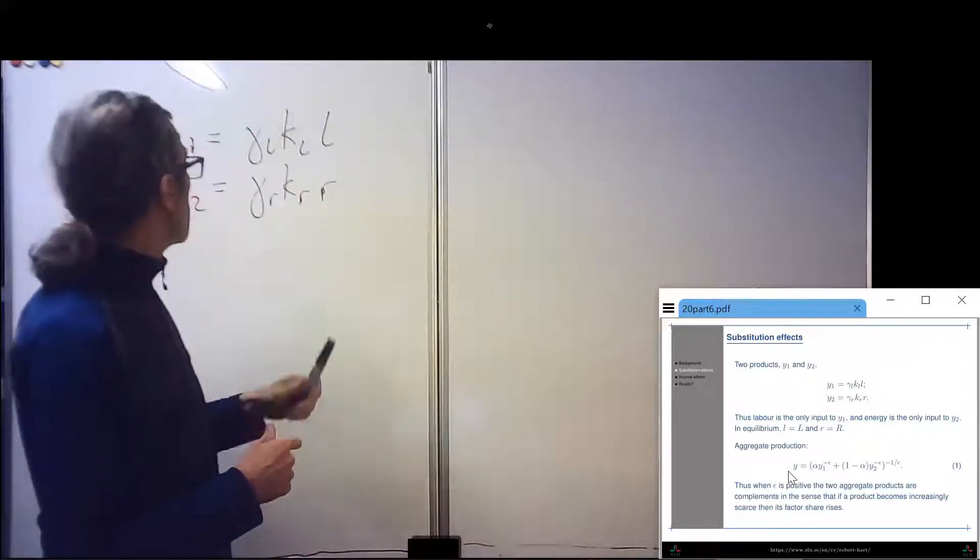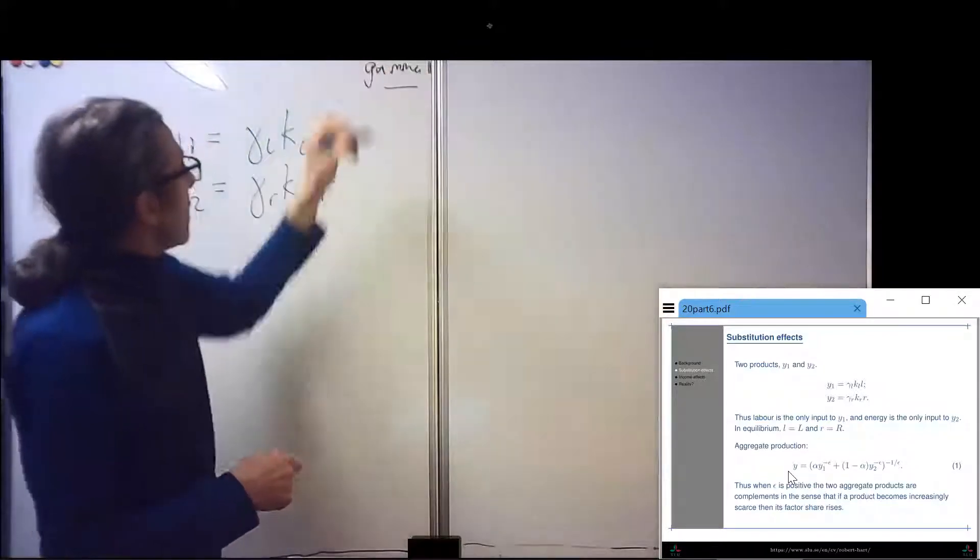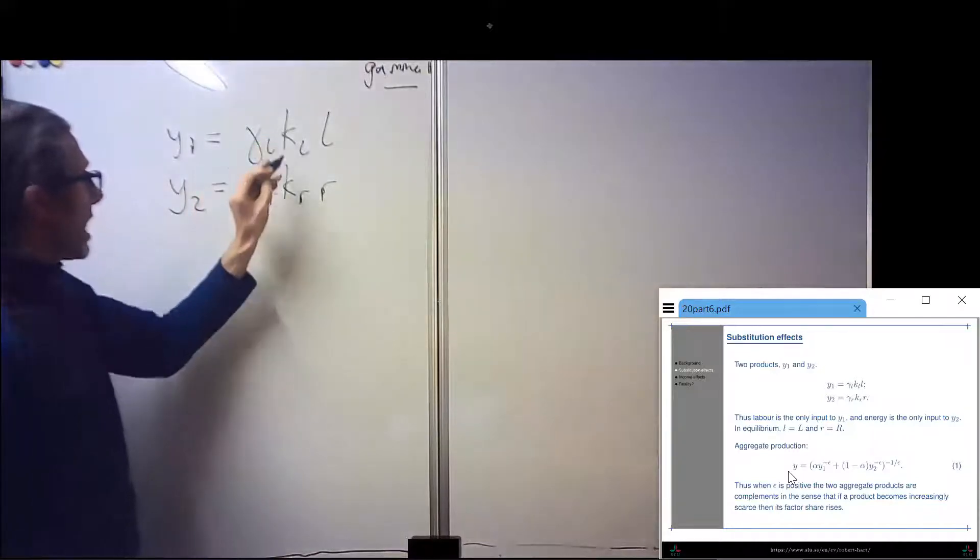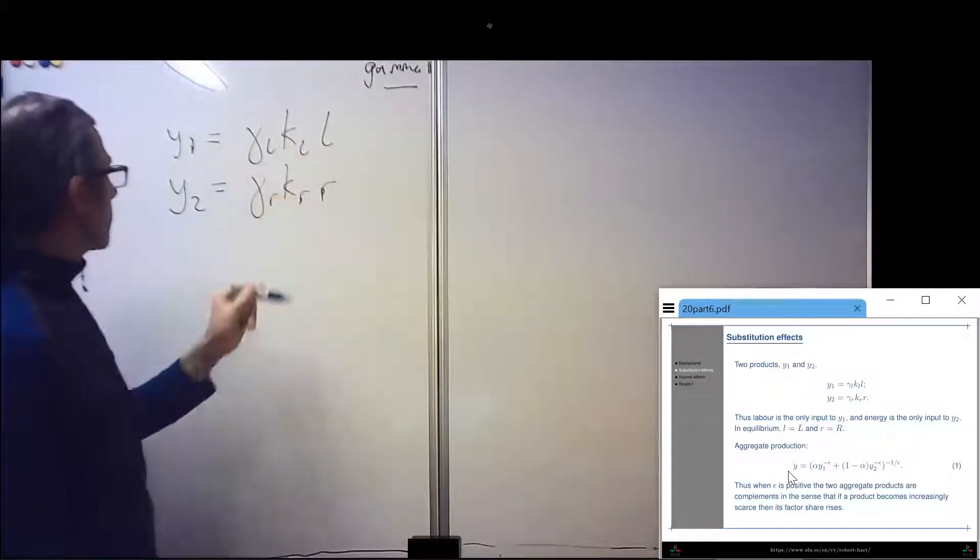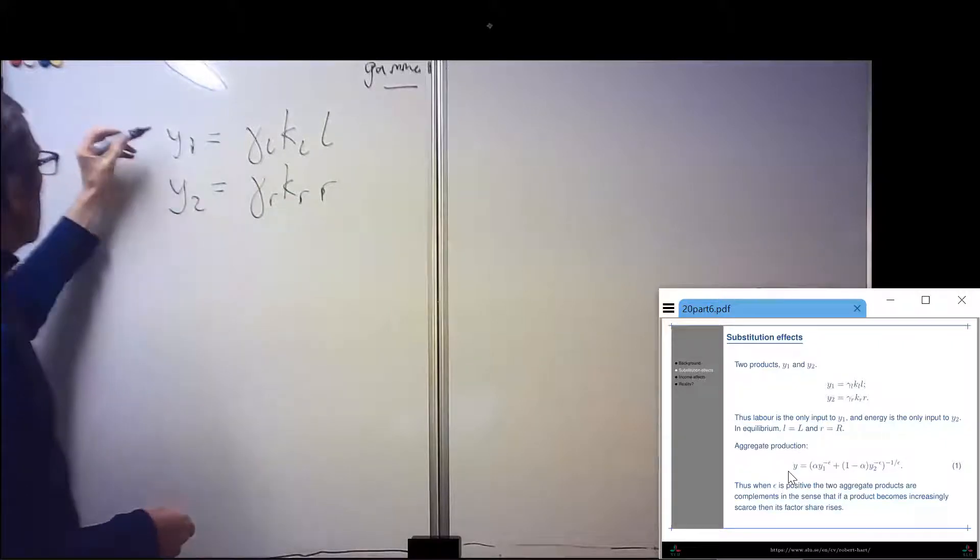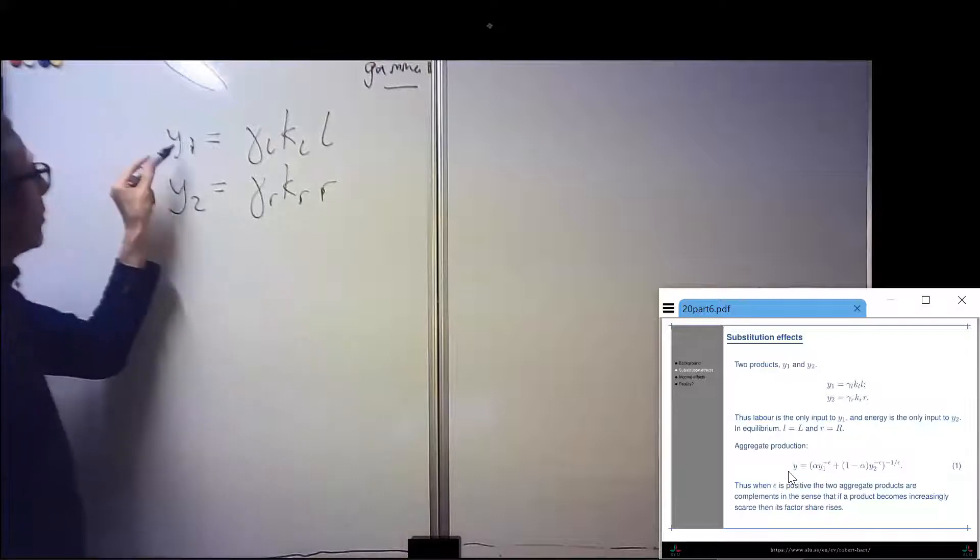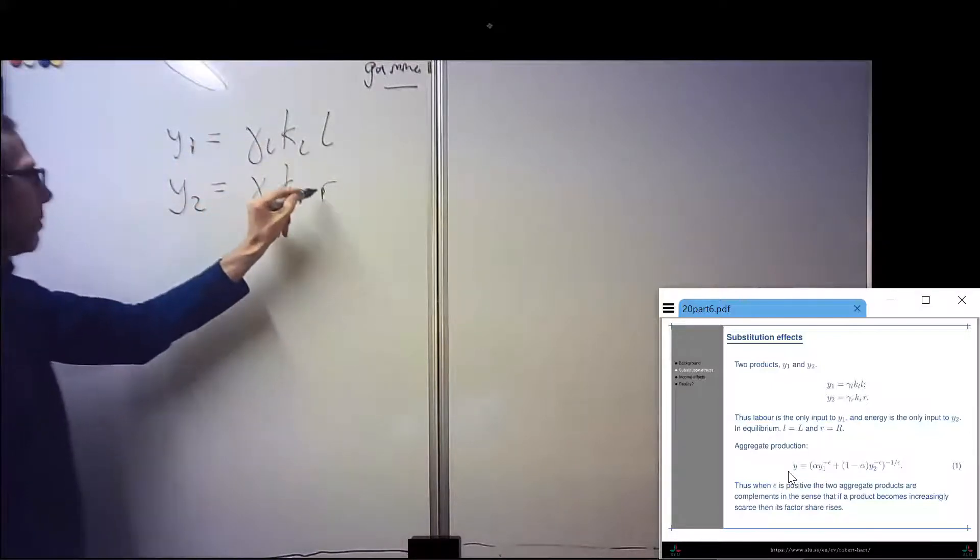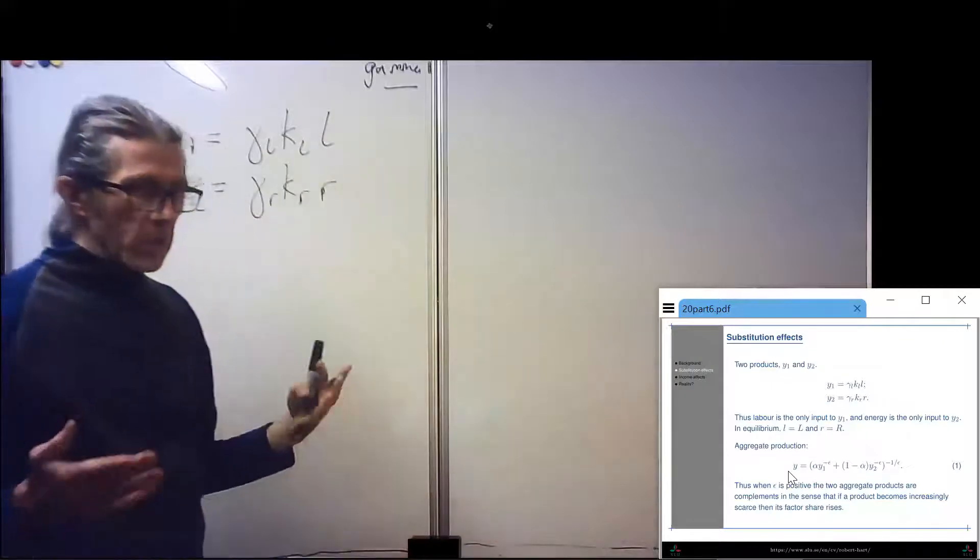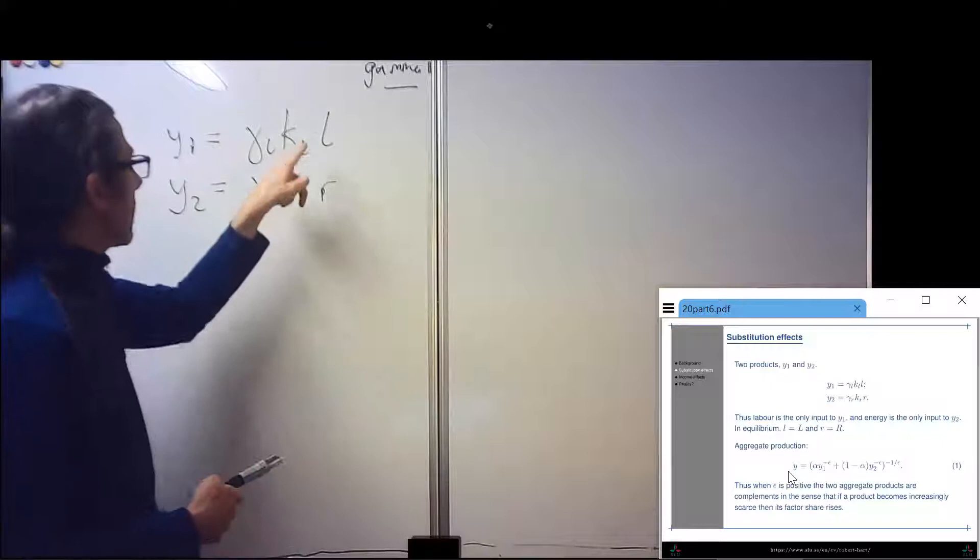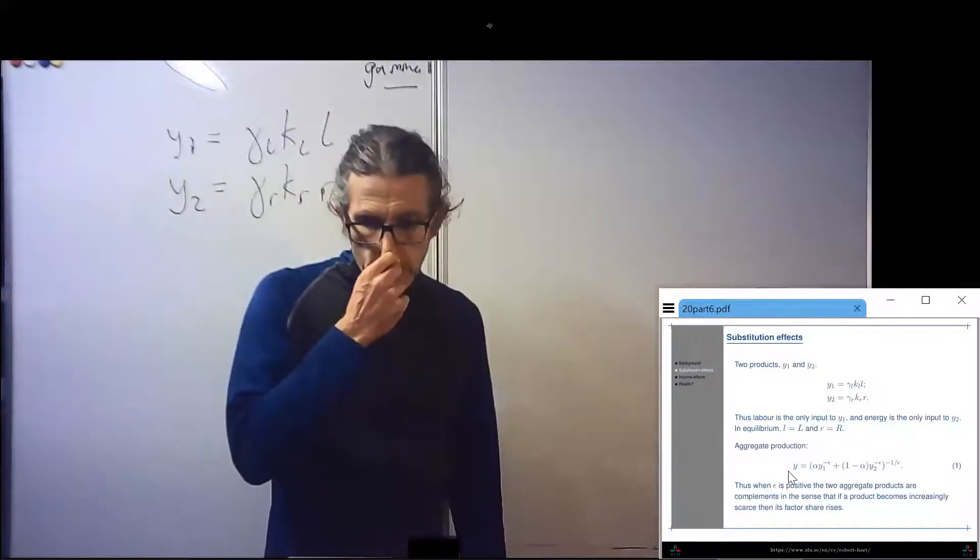So what are these inputs? The gammas are parameters. The K's are productivity levels or knowledge stocks. And the L's are the physical inputs of labor and resources. We're assuming a representative firm and perfect competition. When we aggregate up, we can think of a big L for aggregate labor and a big R for aggregate resource use.